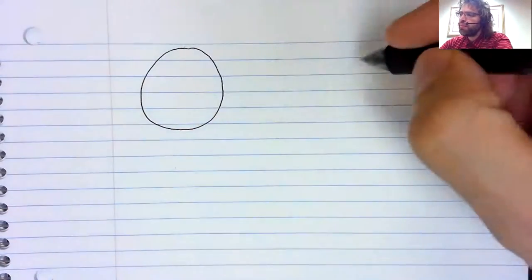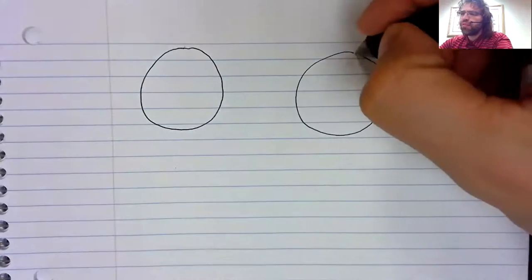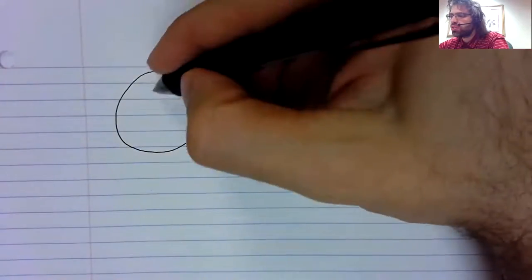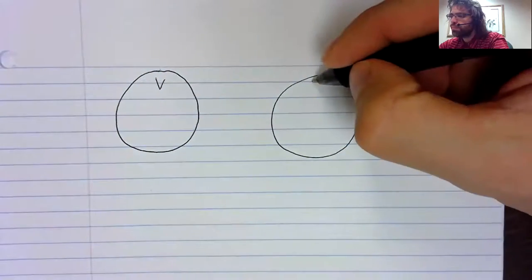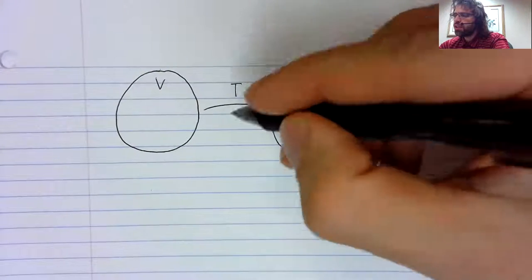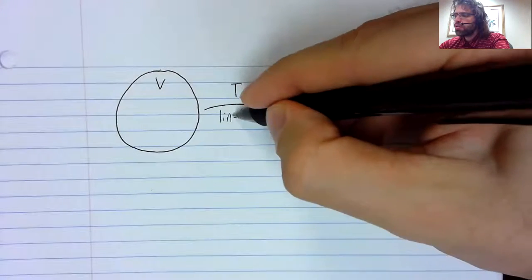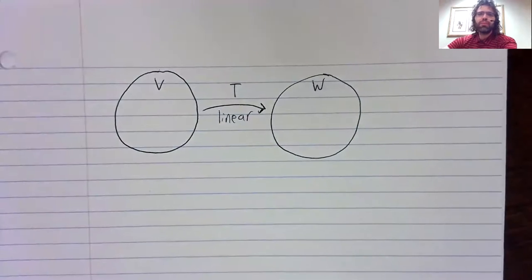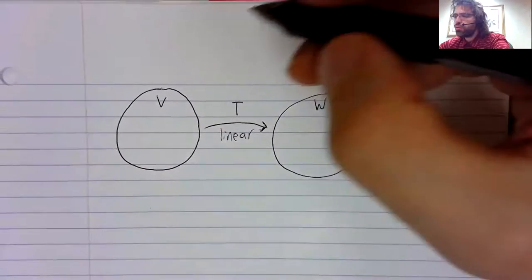Okay, a quick reminder of what we are doing. We have a vector space V, and we have a vector space W, and we have a linear transformation from V to W.